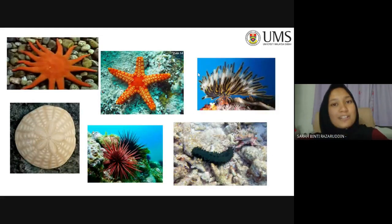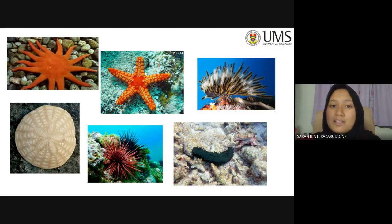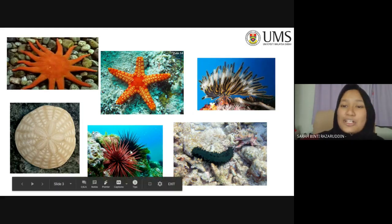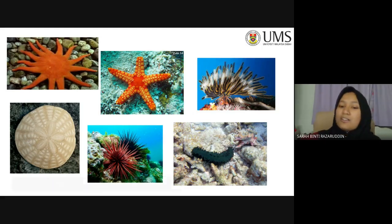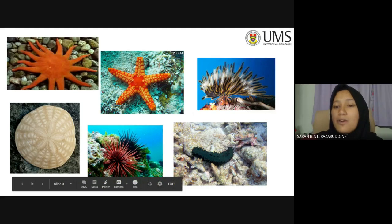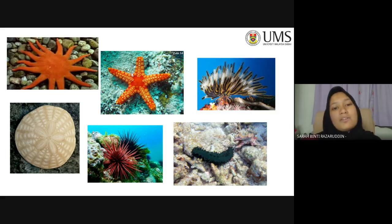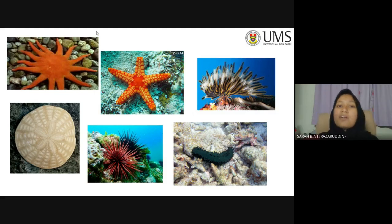Here are some organisms that are spiky, spiny, and prickly: starfish, which come in different shapes, sizes, and colors; sand dollars, which are quite round; sea urchins, which are very prickly; sea cucumbers, which look like sea slugs; sea feathers, which are very majestic; and brittle stars, which are similar to starfishes but have more arms and are quite different.